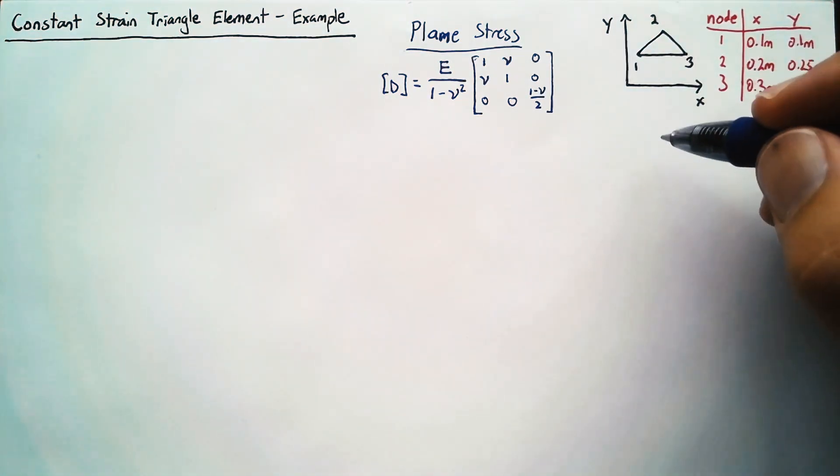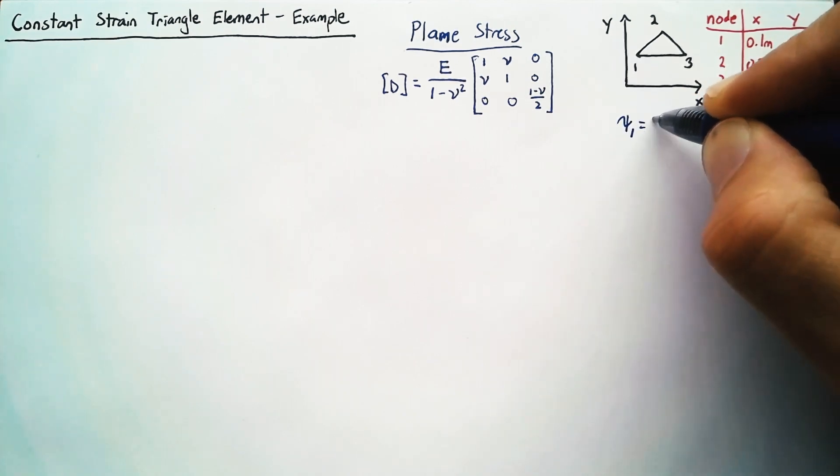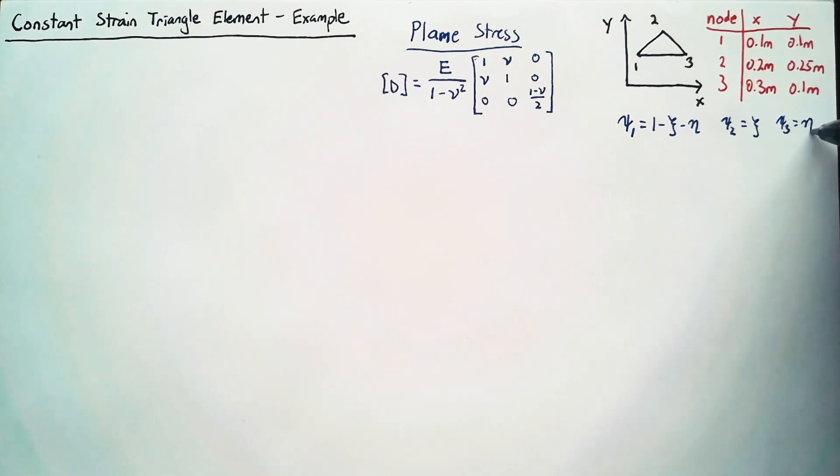And just recall from one of our videos the shape functions that we're looking at here are psi1 is equal to 1 minus xi minus eta, psi2 is equal to xi, and psi3 is just equal to eta.